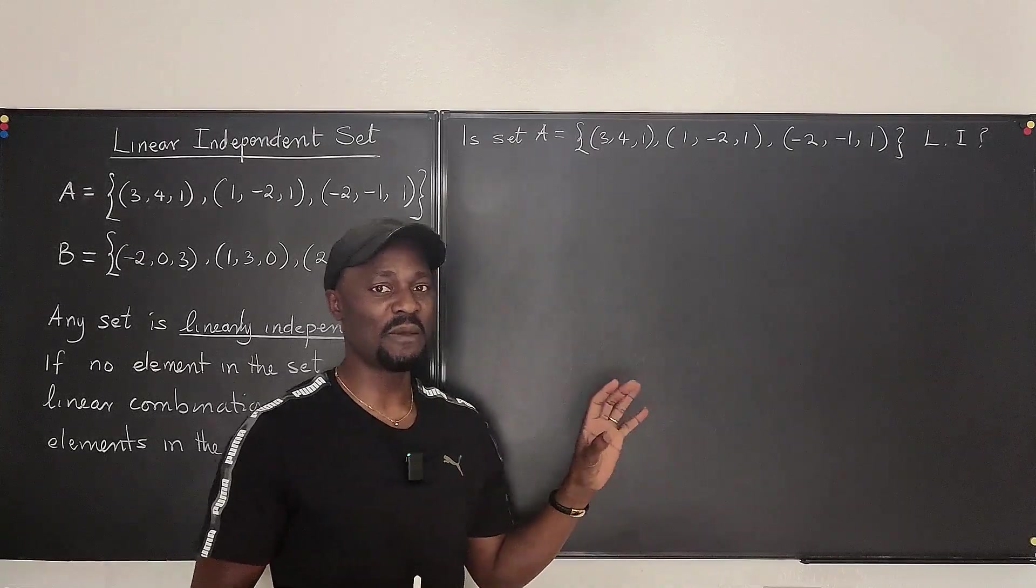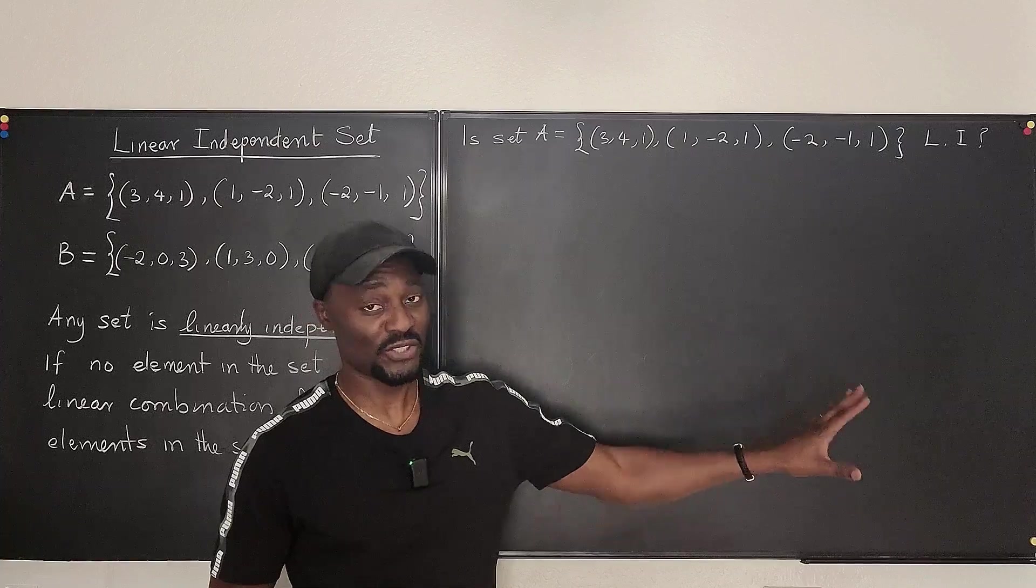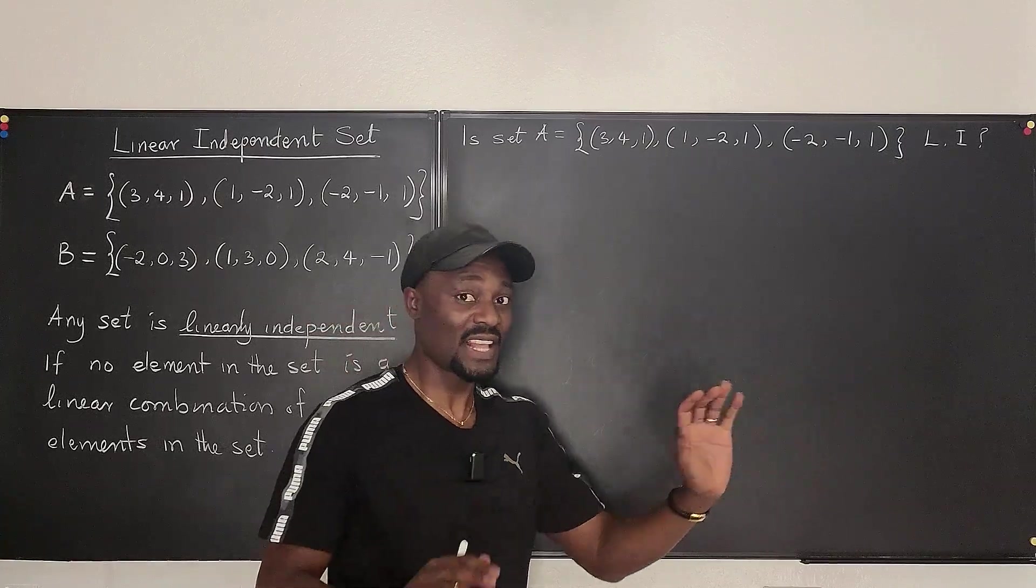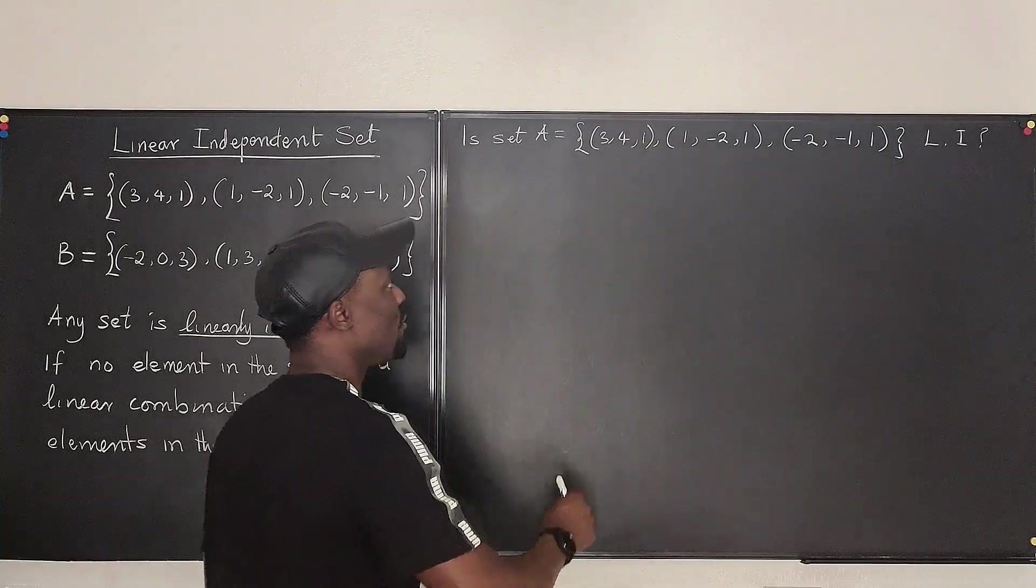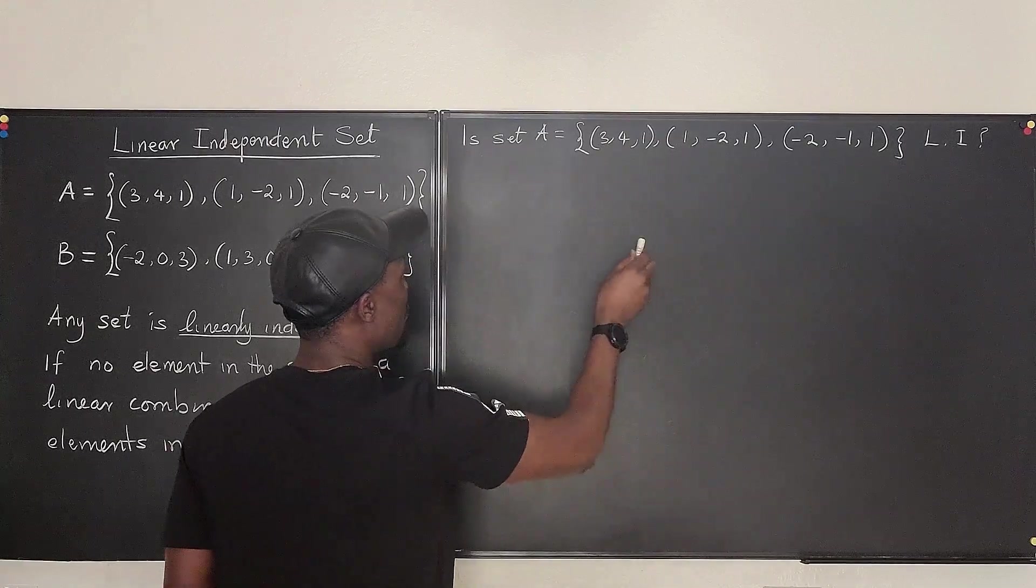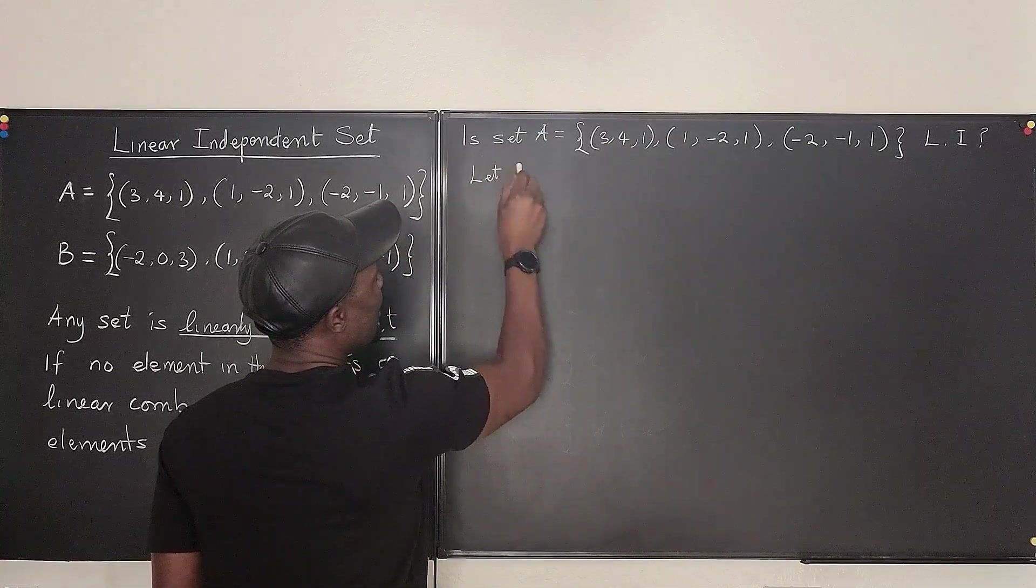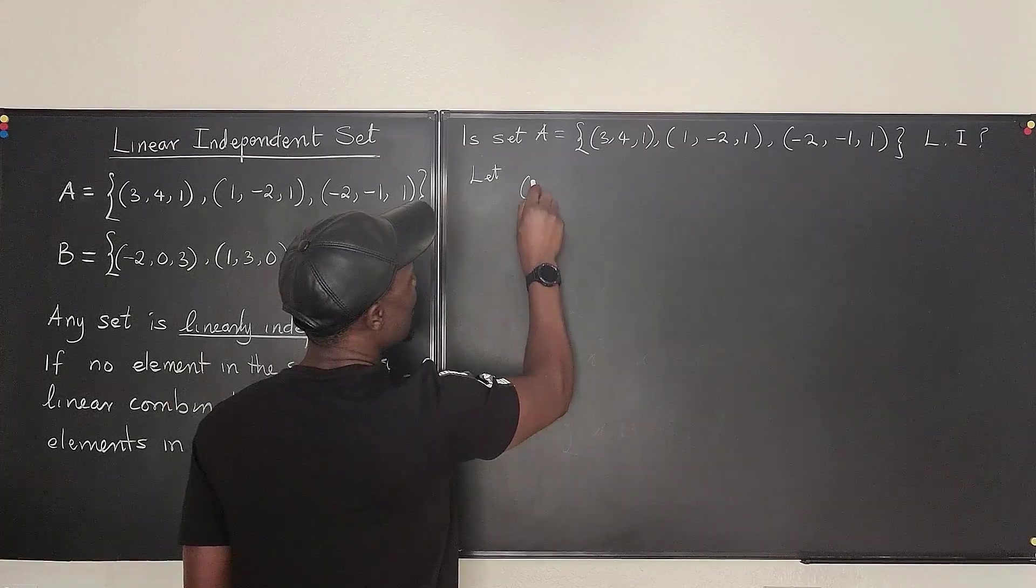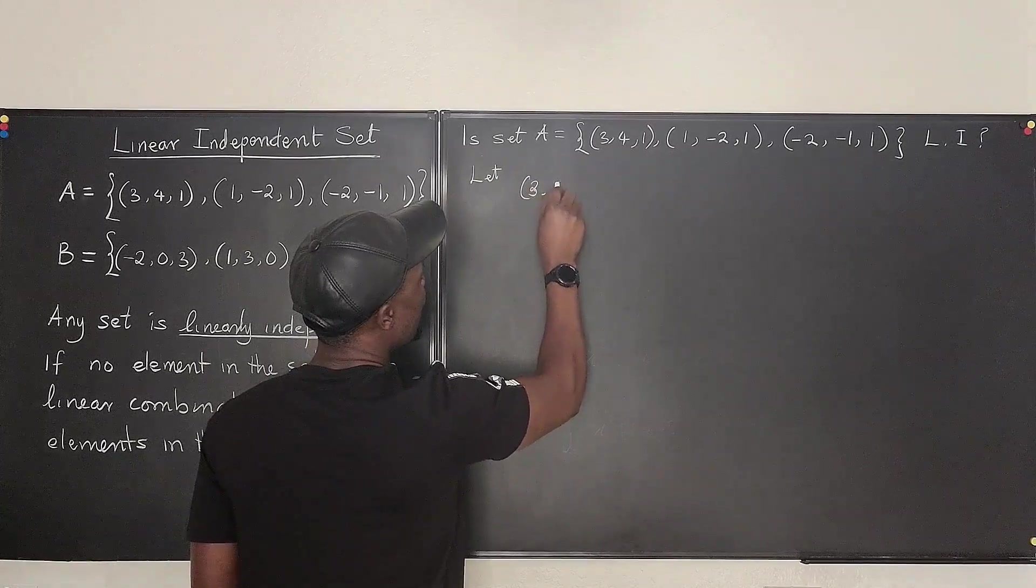You always assume that one of them is a linear combination of the rest of the set. Okay? That's a good strategy. So I'm going to assume that the first one is a linear combination of the other two.